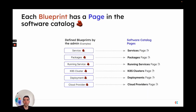Since a blueprint is a core component in Port and in your software catalog, each blueprint receives a page in your software catalog. So for example, if we create a service blueprint, it's going to receive a services page, and every service in our software catalog will appear on that page.